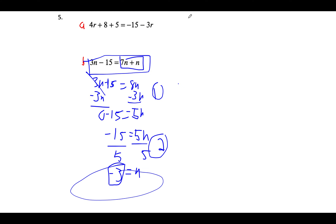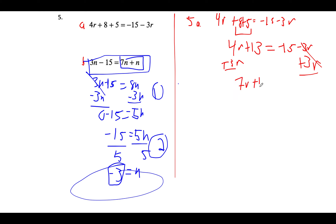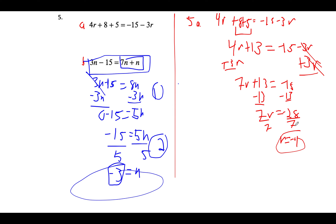For problem 5a, we have 4r plus 8 plus 5 equals negative 15 minus 3r. First, combine like terms: 8 and 5 combine to give 4r plus 13 equals negative 15 minus 3r. We add 3r to both sides — 4r plus 3r gives 7r — so 7r plus 13 equals negative 15. We subtract 13 from both sides to get 7r equals negative 28, then divide both sides by 7, and r equals negative 4.